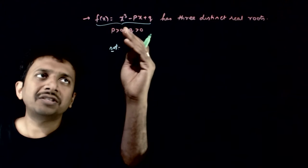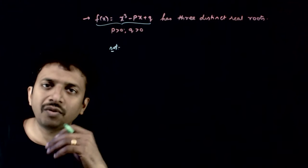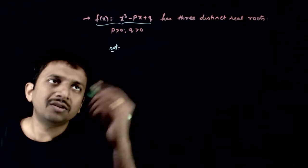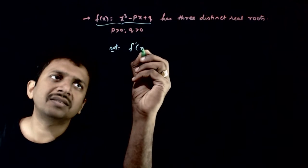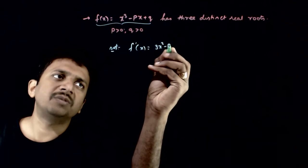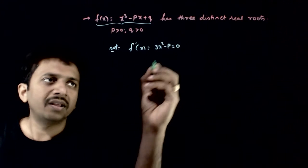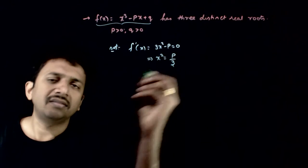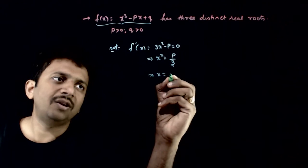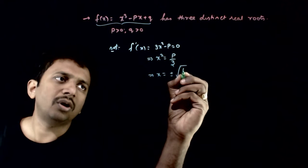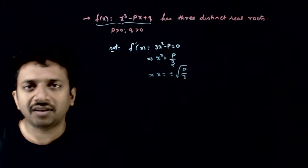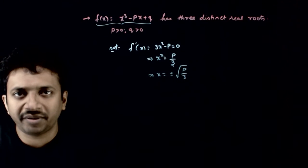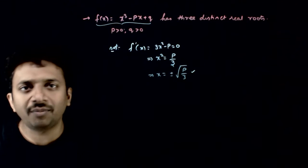If f of x is equal to x cube minus px plus q, and you want to enquire about the maximum and minimum, first you need to do the differentiation. To find the critical points, f dash of x is nothing but 3x squared minus p equals 0. That means x squared is equal to p by 3, which implies x is equal to plus or minus root of p by 3. These are the two critical points of this function.